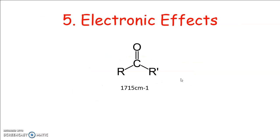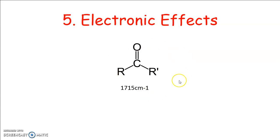The next factor is electronic effects. The frequency and position of IR band is highly influenced by electron delocalization and the electronic effect of neighboring substituents. For example, a neat sample of saturated aliphatic ketones shows a normal band at 1715 cm⁻¹.